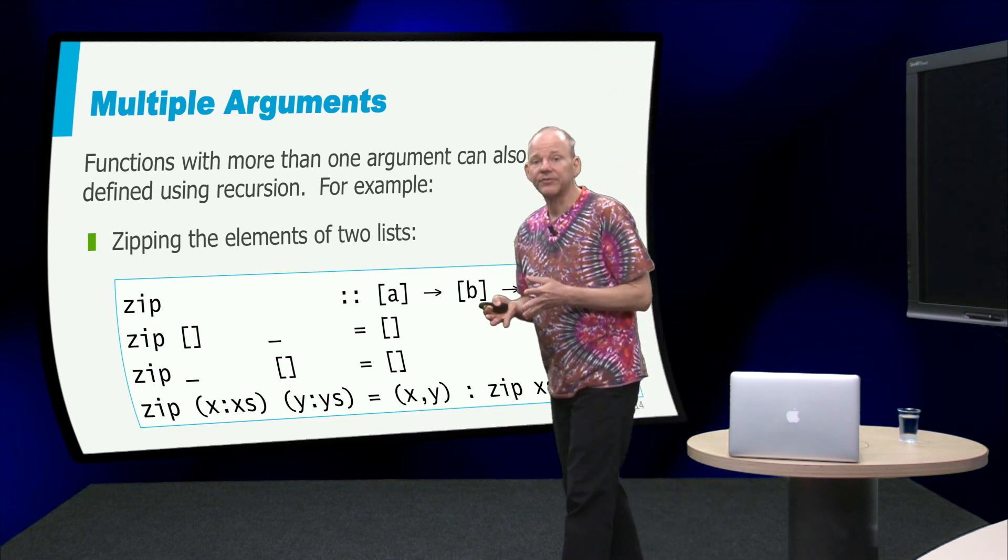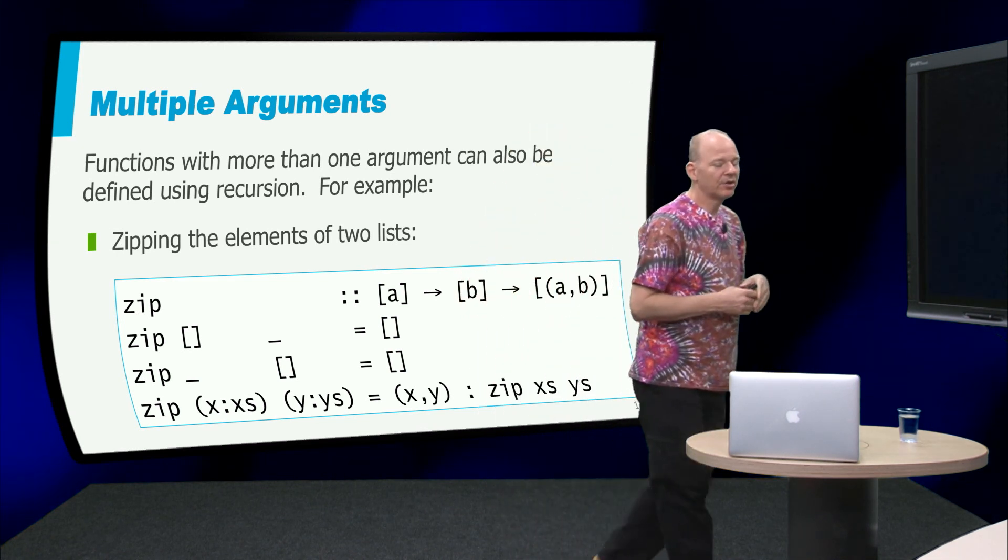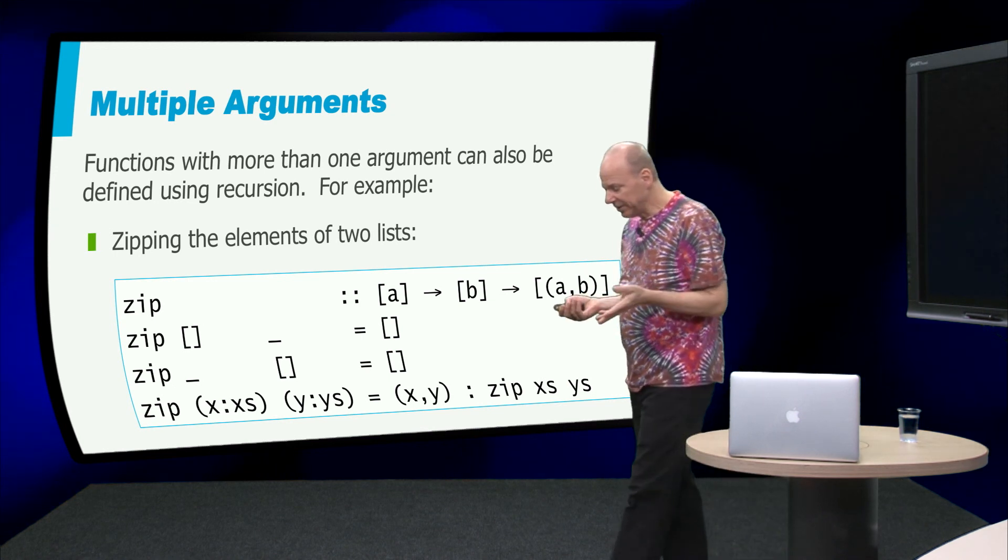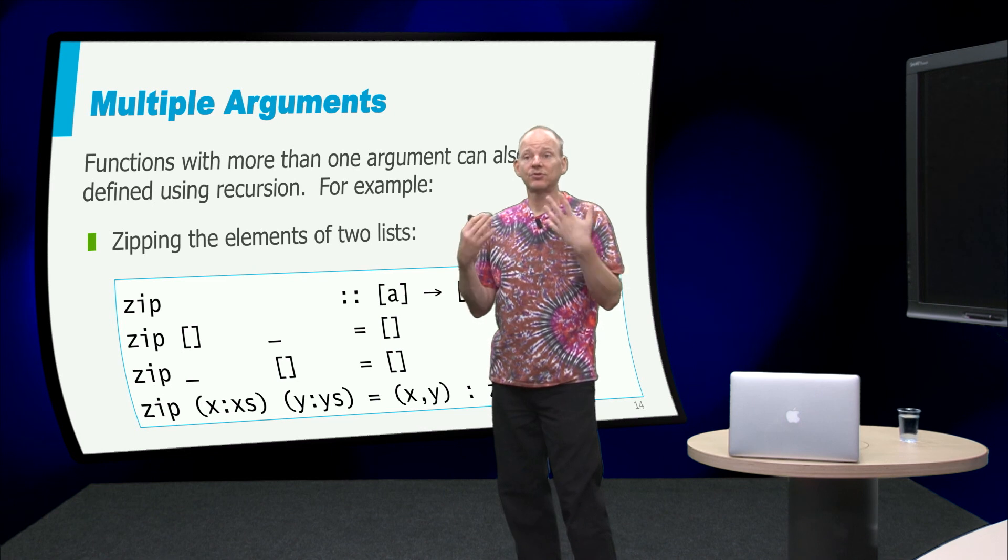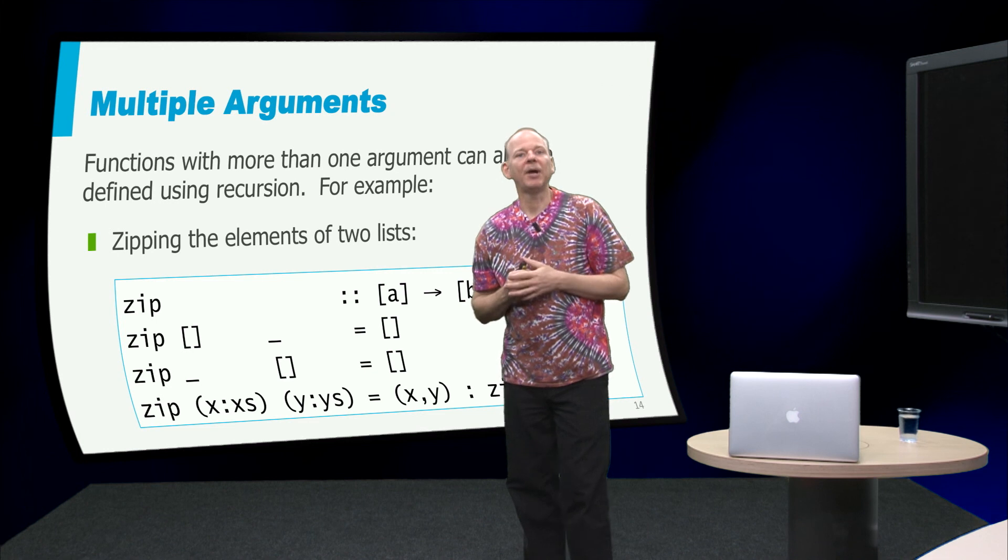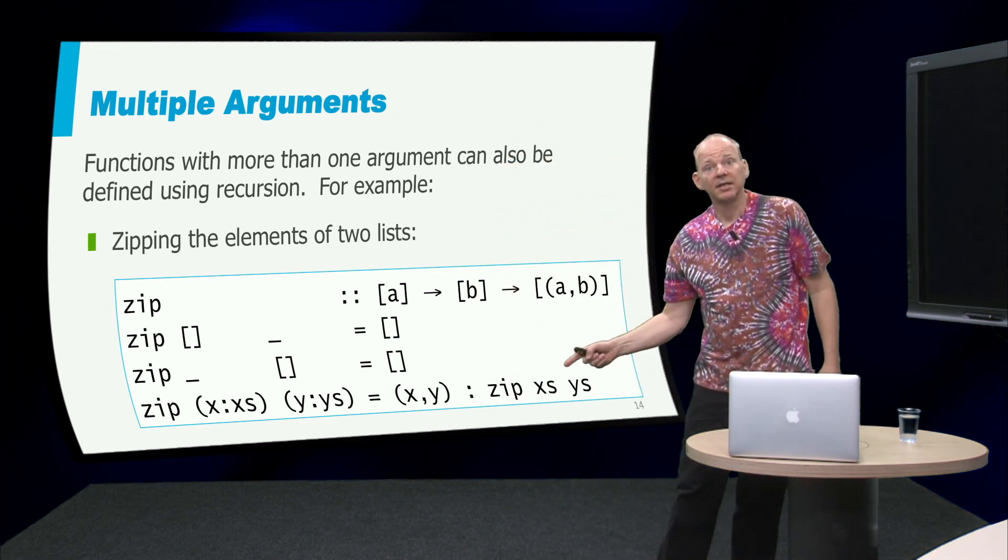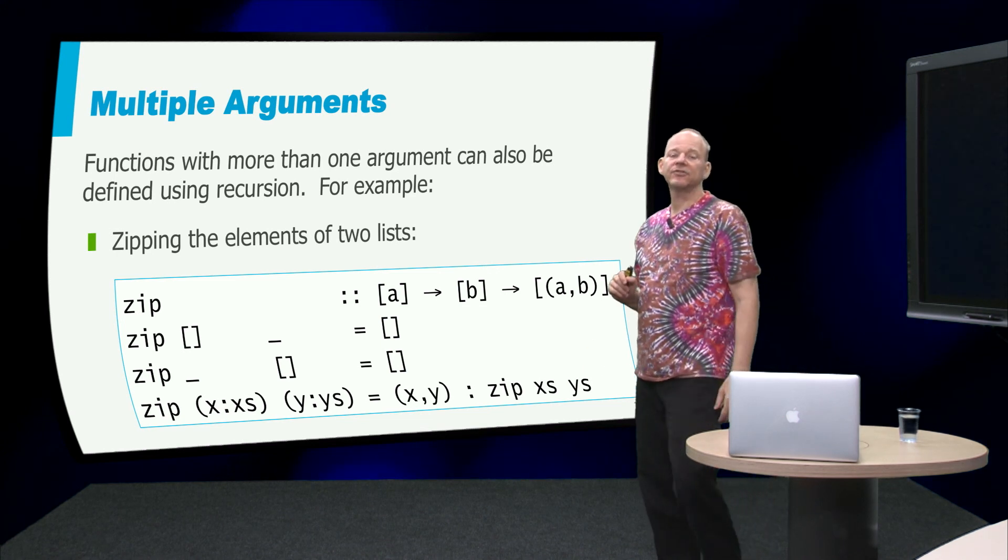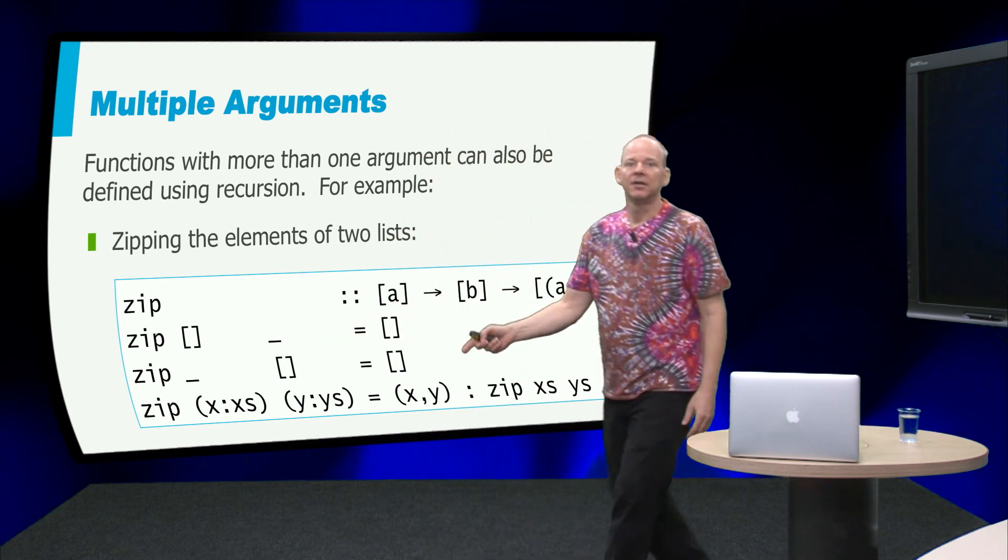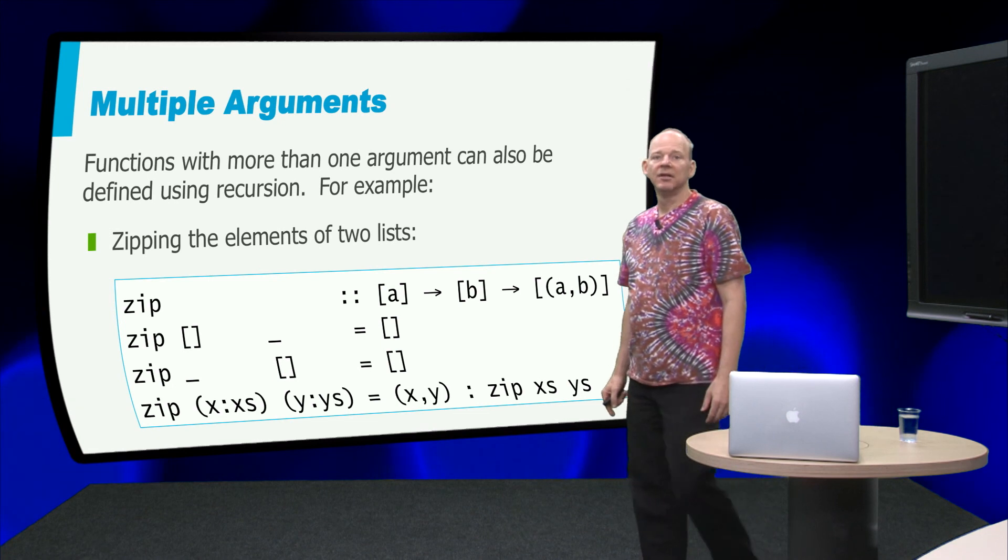Of course we can also define recursive functions that don't recurse over just one argument, but over several, we have seen in the previous chapter the function zip, and how do we define zip? Well zip took two lists, and it would take every element of the two lists and combine them into a pair. So easiest thing here is to look at the last clause here, so if we have two non-empty lists, we take the head of both, put that in a pair and recursively zip the rest.